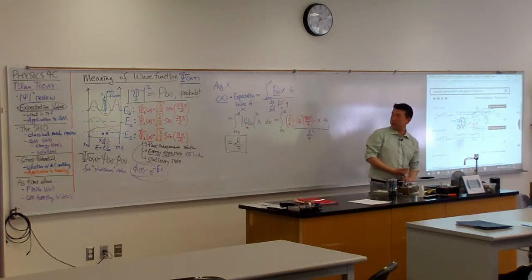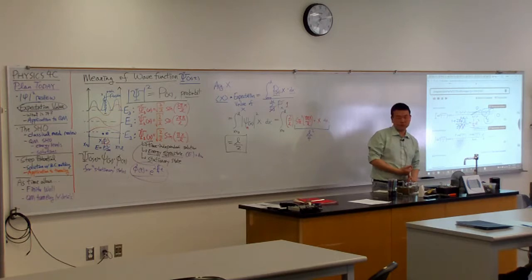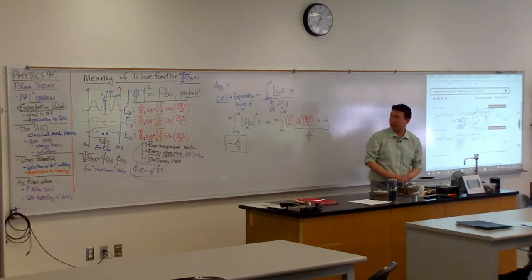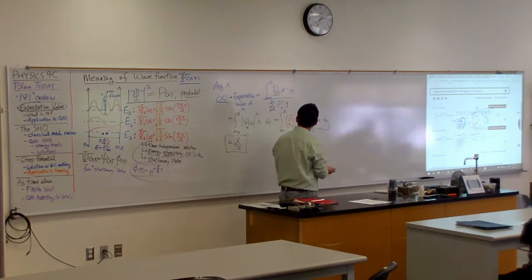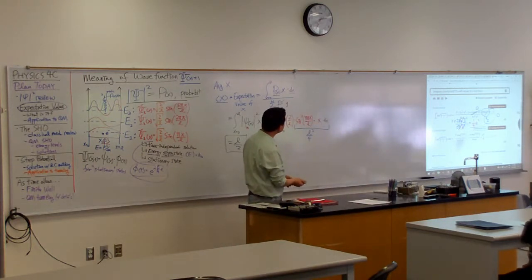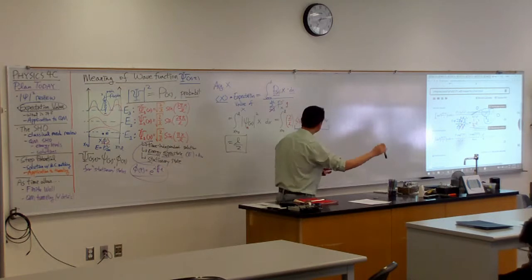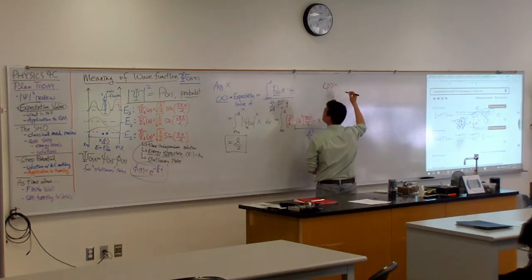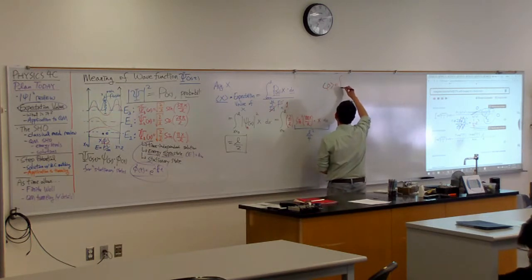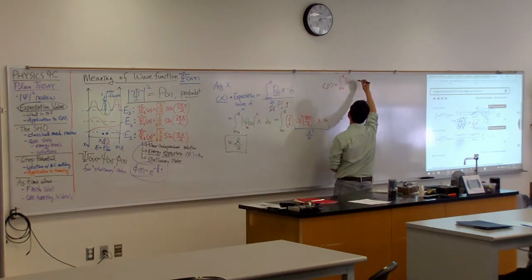Now, this is where I need to introduce a little bit more of the formalism than we have so far. With momentum, if I try to write down the same thing, it doesn't quite work. If I try to write down expectation value of momentum is equal to integral from x equals 0 to L, probability density times momentum times dx,